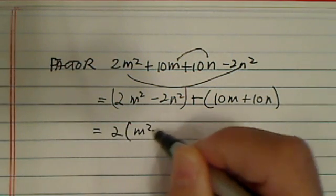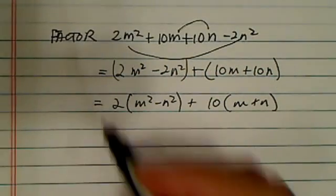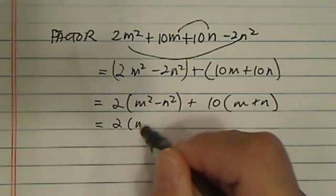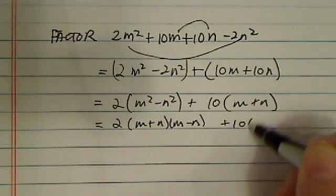Take the two out. m² - n² plus 10. Take it out: m + n. Here's a difference of squares. m + n times m - n plus 10 of m + n.